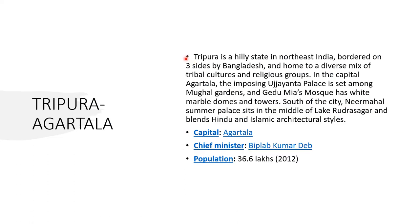The next one is Tripura, capital Agartala. Tripura is a hilly state in northeast India, bordered on three sides by Bangladesh, home to a diverse mix of tribal cultures and religious groups. In the capital Agartala, the imposing Ujjayanta Palace is set among Noval Gardens, and Jagannath Mosque has white marble domes and towers. South of the city, Neer Mahal Summer Palace sits in the middle of Lake Rudra Sagar and blends Hindu and Islamic architectural styles. The capital is Agartala, Chief Minister Abhijit Kumar Deb, population 36.6 lakhs in 2012.